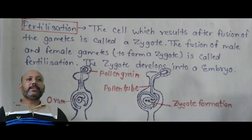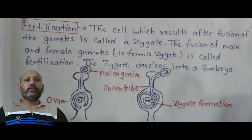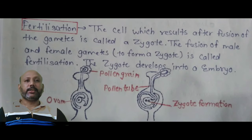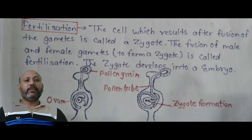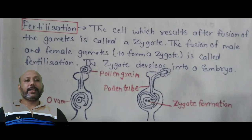The cell which results after the fusion of the gametes is called a zygote. The fusion of the male and female gametes to form a zygote is called fertilization. The zygote develops into an embryo. As shown in the figures, the pollen grains travel through the pollen tube into the ovum and the zygote is formed.